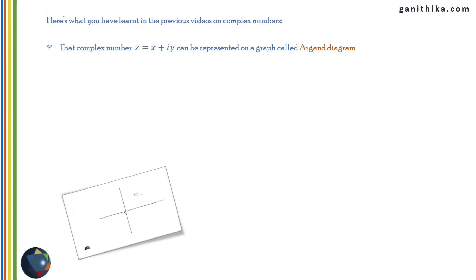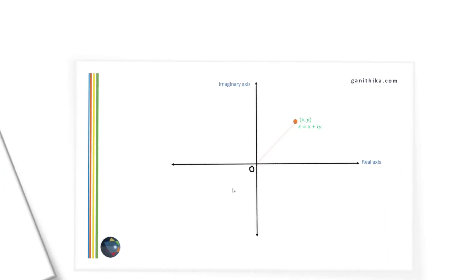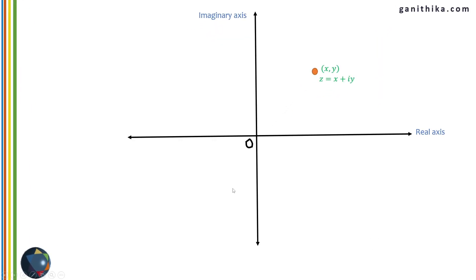The next thing you should know is that the length of the complex number is given by √(x² + y²). If (x, y) is a point on the Argand diagram, the length of the complex number — the distance from the origin to the point (x, y) — can be given by √(x² + y²) using the Pythagorean theorem.